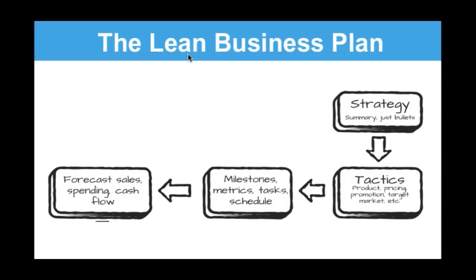I'm going to talk about what we do, which you see here in this visual. It has four components: lean business planning is about strategy, tactics, specific concrete specifics including milestones, metrics, tasks, and schedule, and essential numbers to run a business — all of which lead to managing cash flow. That's the sales forecast, the spending forecast, and the cash flow. That's a lean business plan, and it is not a document. You don't necessarily print it out. It's not something you're writing for outsiders to understand your business. Its objective is internal management.